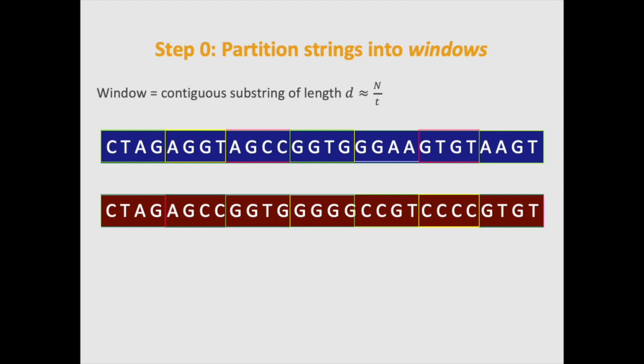The zeroth step is we partition the strings into what are known as windows. So we have a parameter d, which is going to be the length of each window, and then we have t, which is the number of windows. Think of each of d as approximately square root of n.